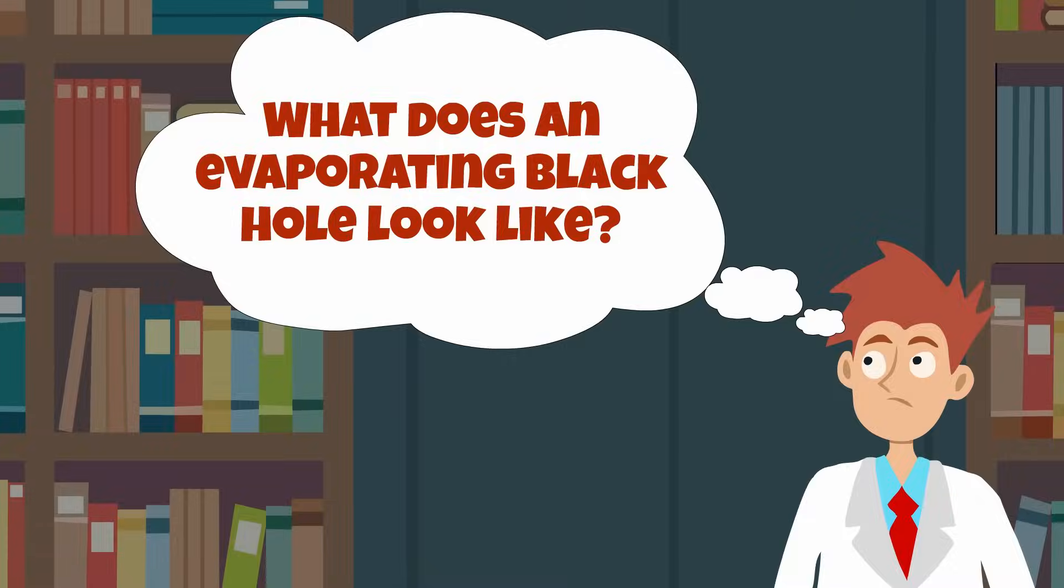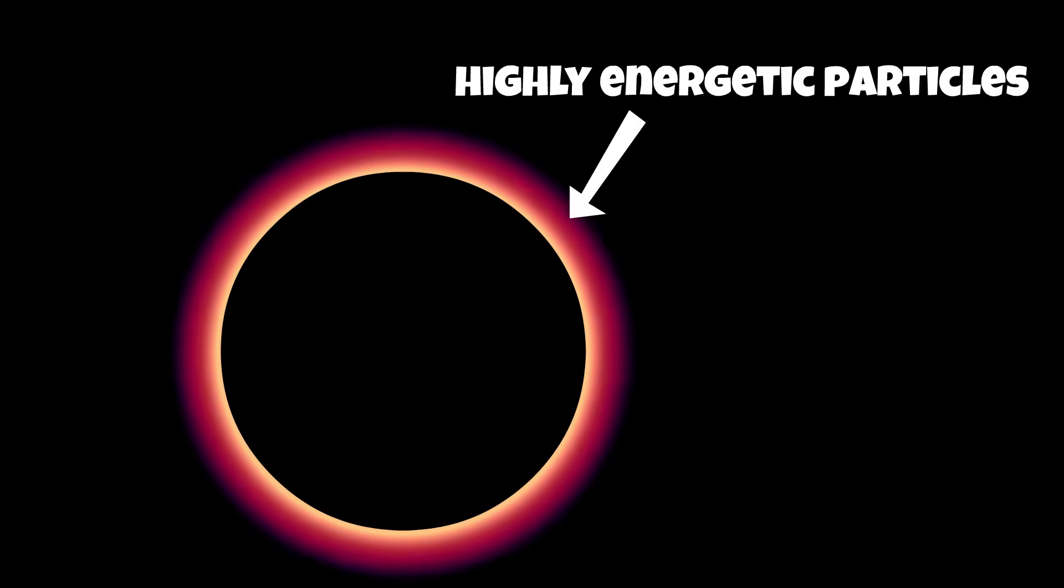The Hawking radiation itself would contain highly energetic particles, antiparticles, and gamma rays. Such radiation is invisible to the naked eye, so an evaporating black hole might not look like anything at all.